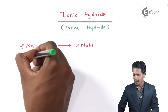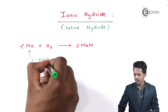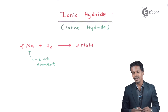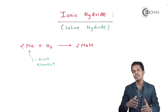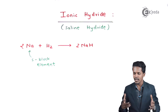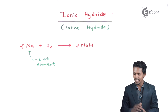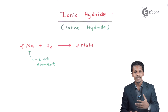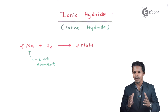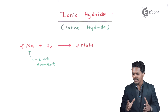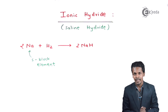Sodium is an S-block element, and the hydrate formed is ionic in nature. These ionic hydrides have certain properties: when in solid form, they have a very crystalline structure. In the solid form they do not conduct electricity, so they act as non-conductors. They are also non-volatile and stable in the solid state.